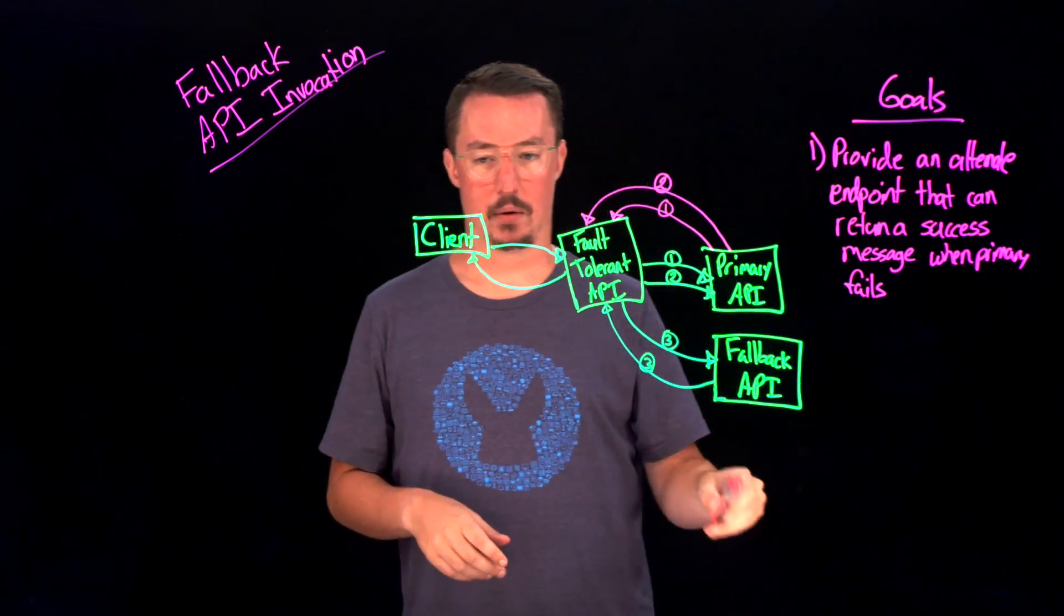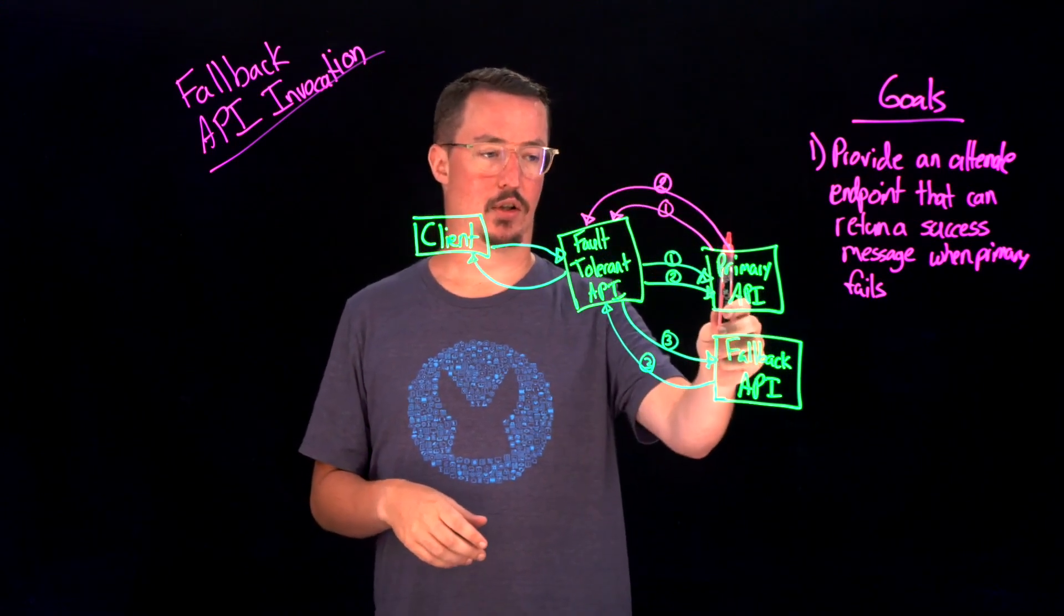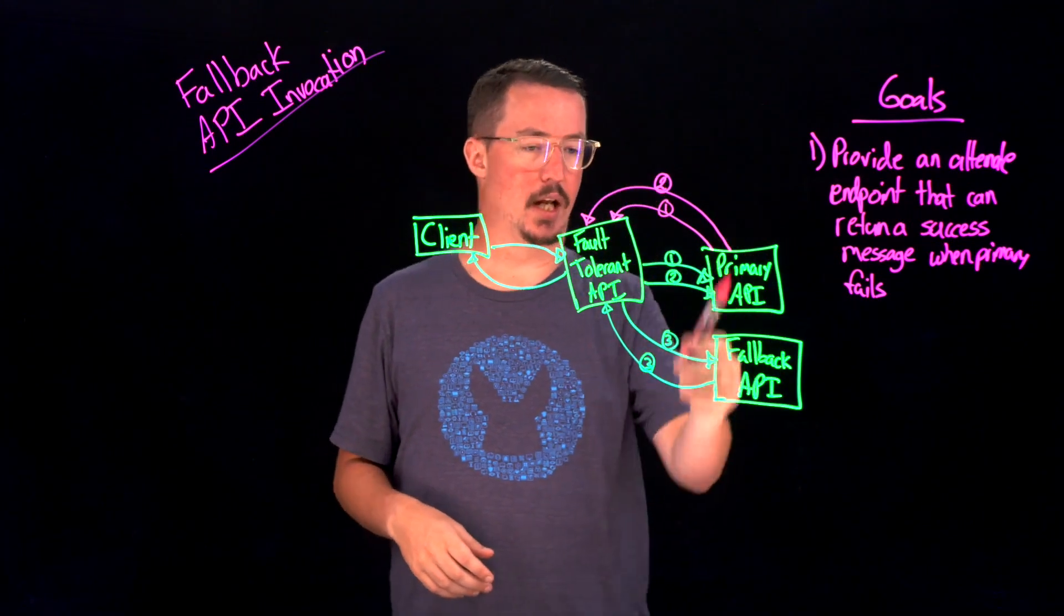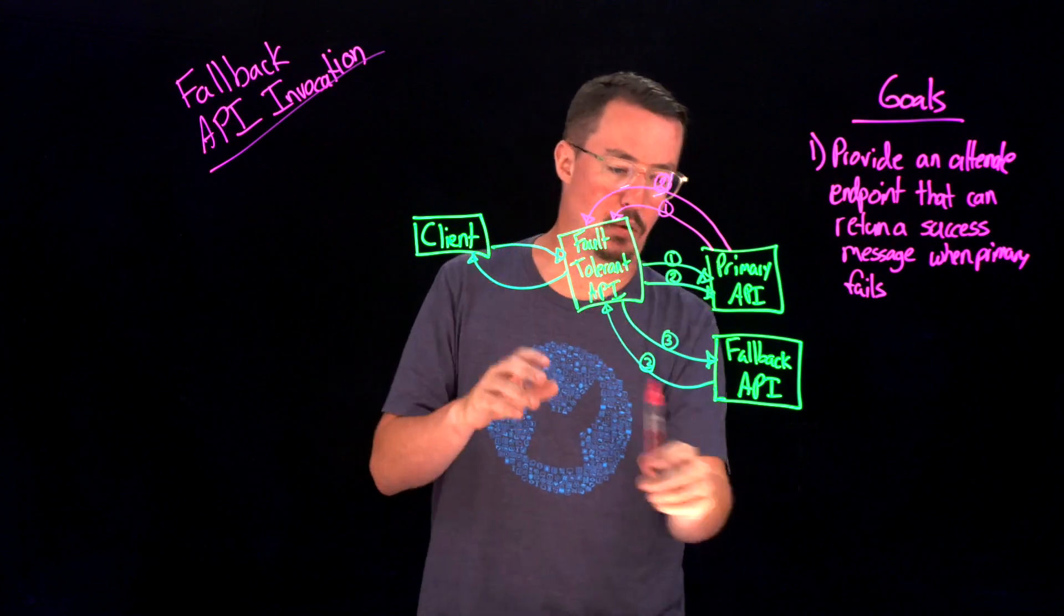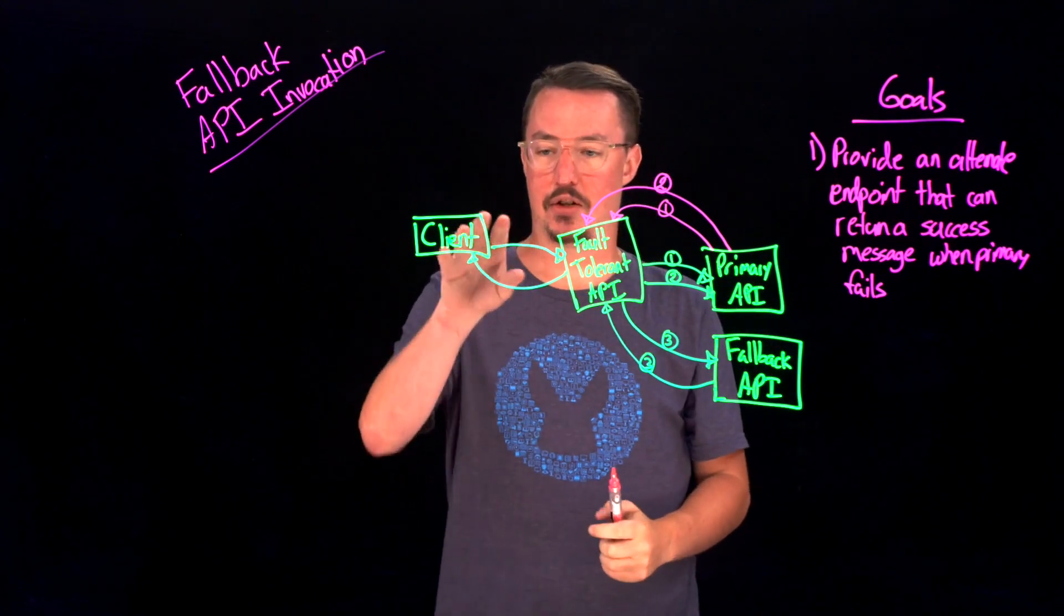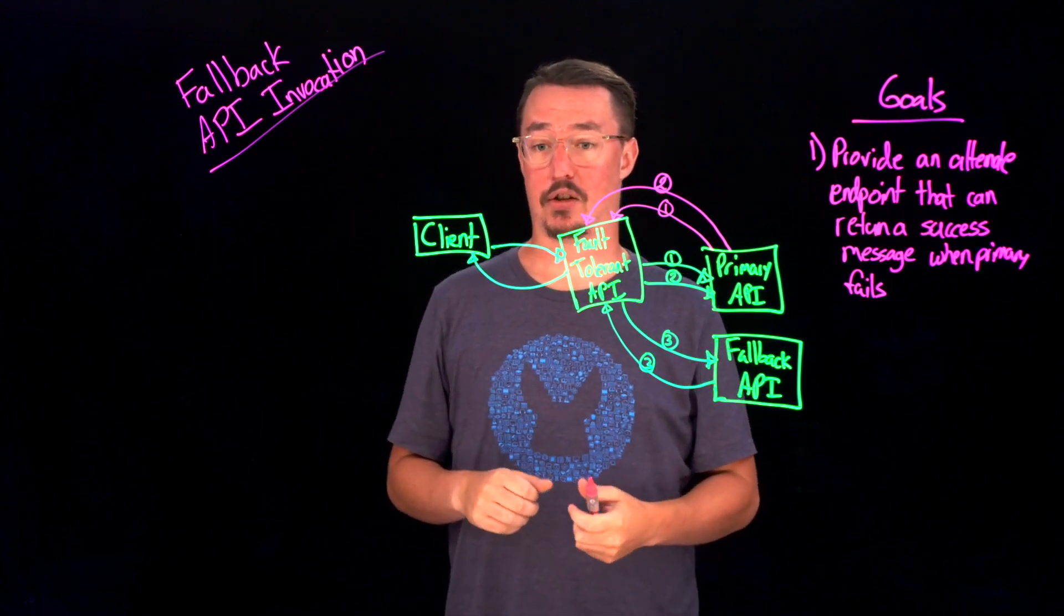So the way this looks now is the client made one call to our API, and the fault-tolerant API took care of the pattern of handling these errors and then calling the fallback API, receiving the message back. And to the client, it looks like they got a completely successful message.